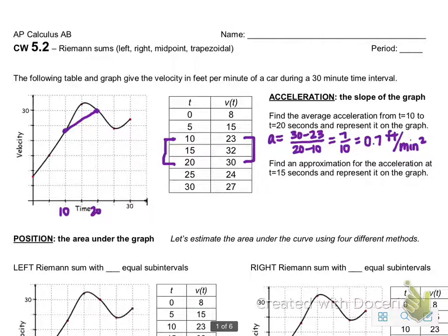So this is what I got: 7 tenths or 0.7 feet per minute squared. And then to represent it on the graph, we have just the slope between those two points. That's all average acceleration is on a velocity graph.